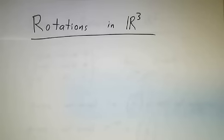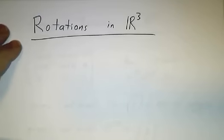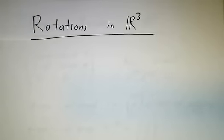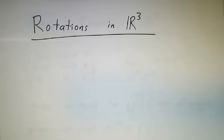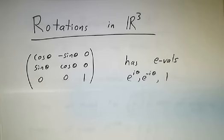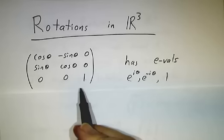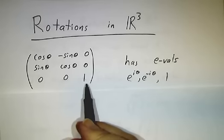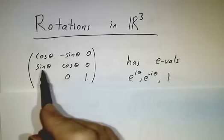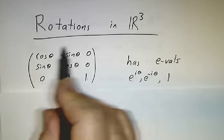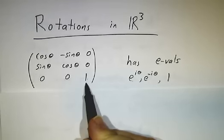In the last video, we talked about what happens when you diagonalize an arbitrary unitary operator. In this video, we're going to talk about the example that motivated the whole subject, which is rotations in good old three-dimensional space. So first of all, let's look at the example of rotating things about the z-axis. We rotate in the xy plane and leave the z-axis alone.